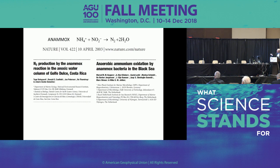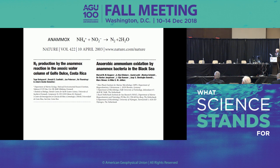Then something really big happened: two groups simultaneously published the existence of anammox in the ocean — Dalsgaard and friends, a Danish group, and Kuipers and friends, a German group, both at the same time. Anammox is ammonia plus nitrite going to N2. This was a big discovery. We didn't even know about anammox, and all of a sudden we had this new way to produce nitrogen gas loss.